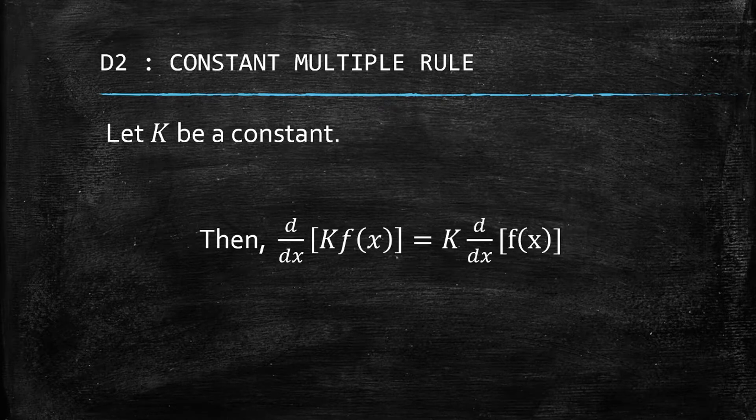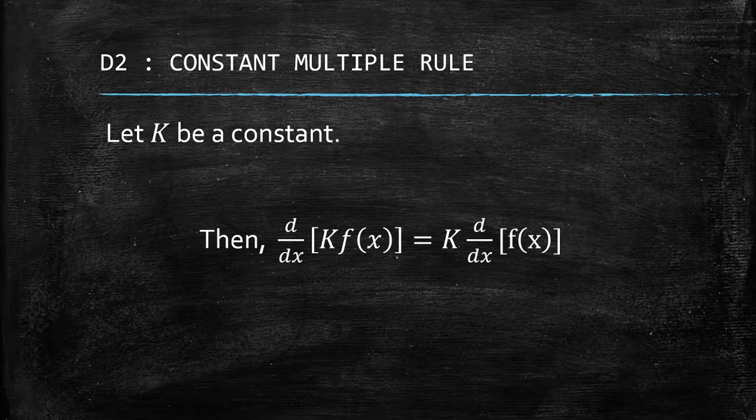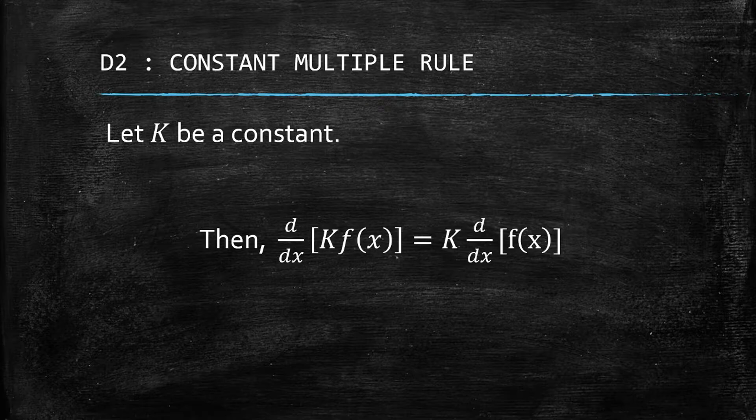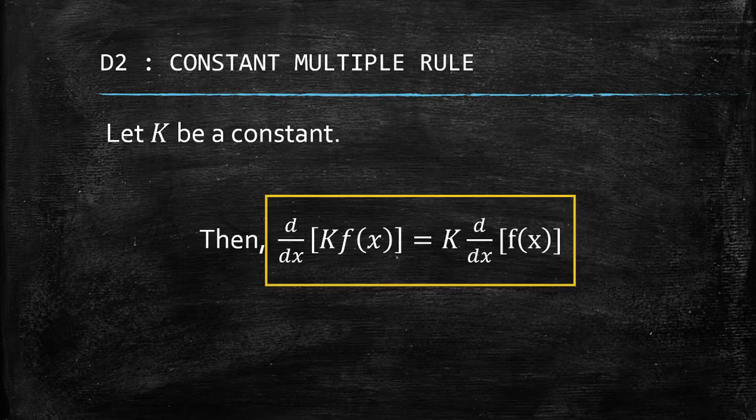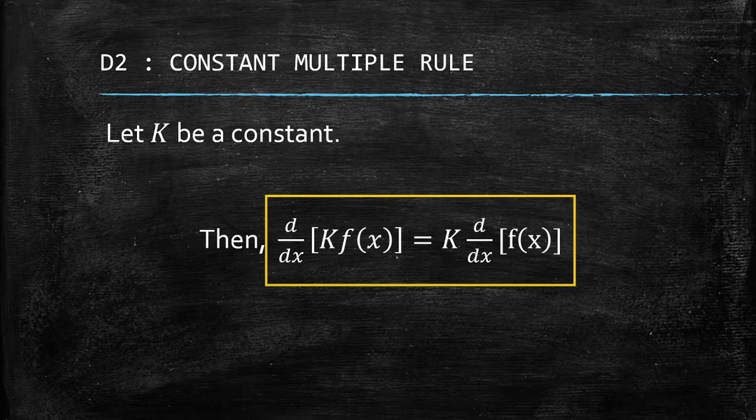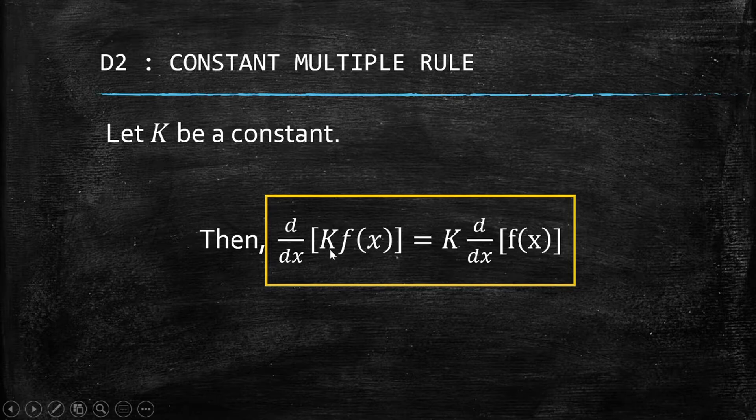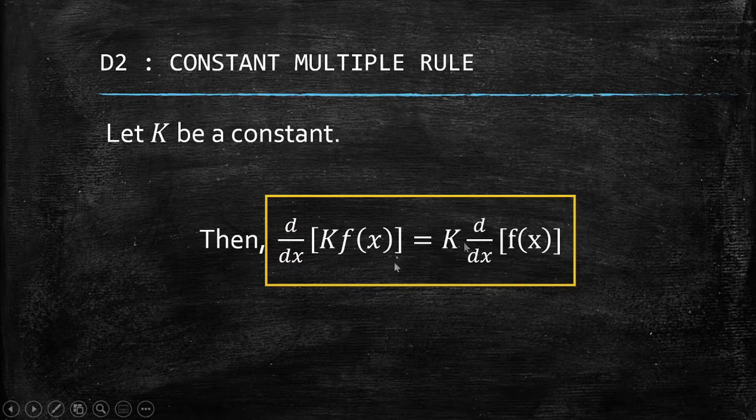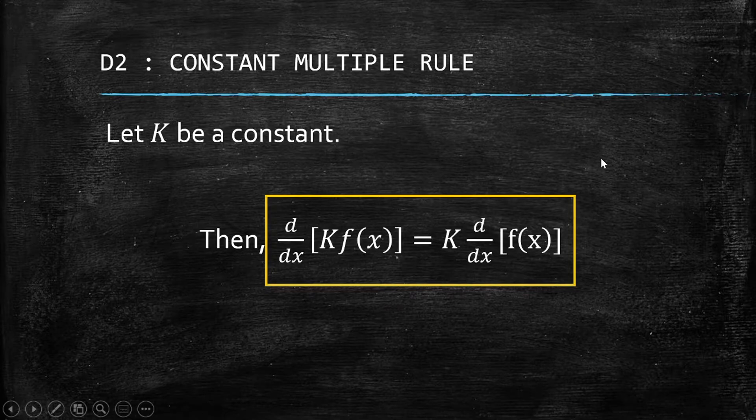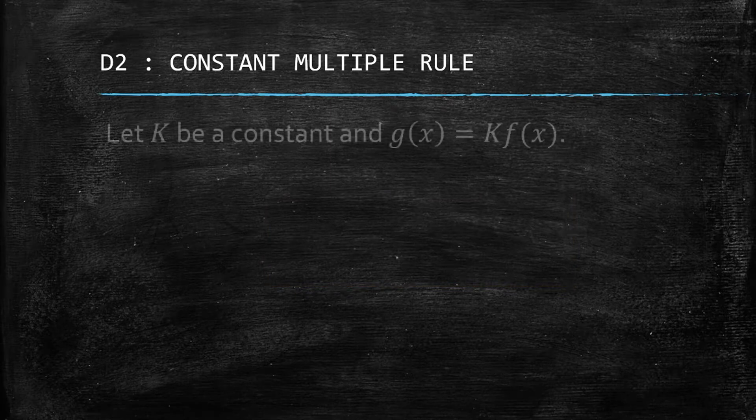We observe, although it's not the right term to use, it seems that K is factored out of the derivative. It's not really factoring but rather the brilliant use of the laws of limits. Let's try to prove this and why it's true.